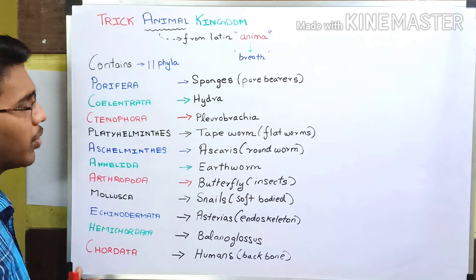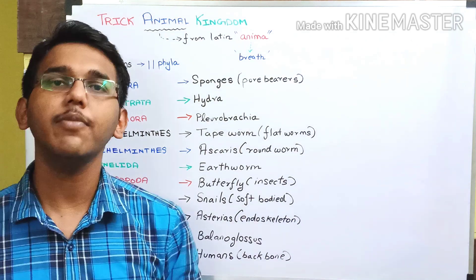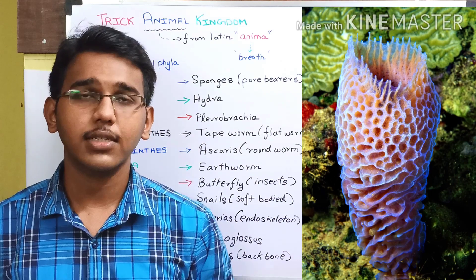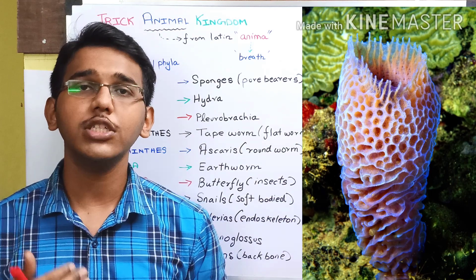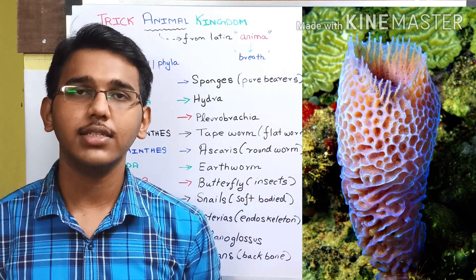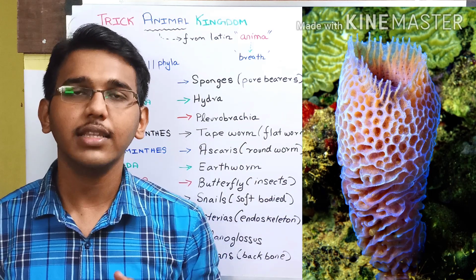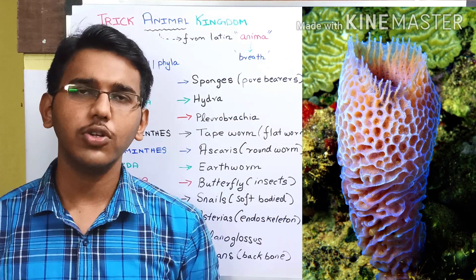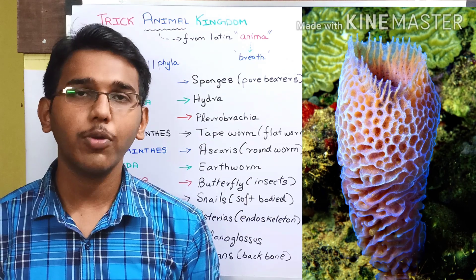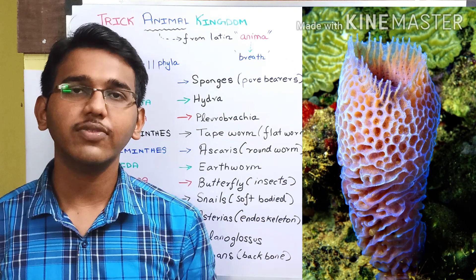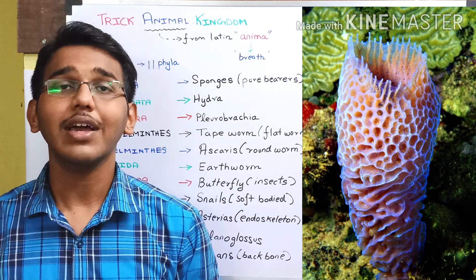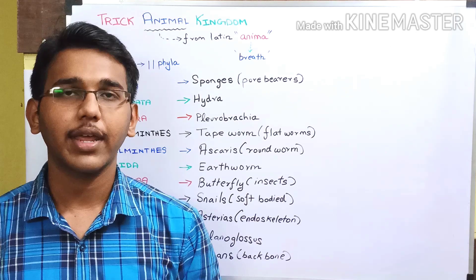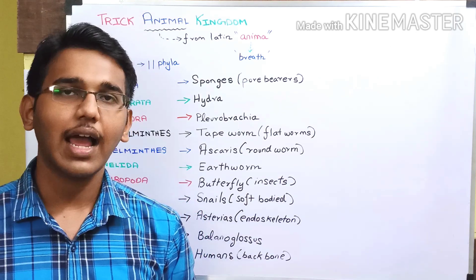First, let us discuss phylum Porifera. The example of phylum Porifera is sponges. About 5,000 species of sponges are present in phylum Porifera. These are also called pore-bearers because of the presence of tiny pores in their body.